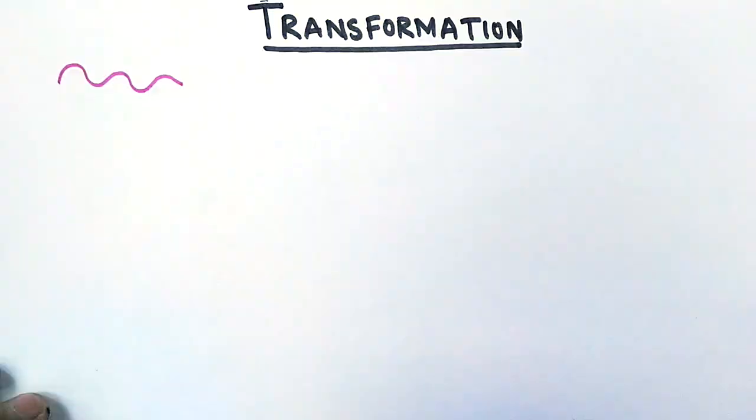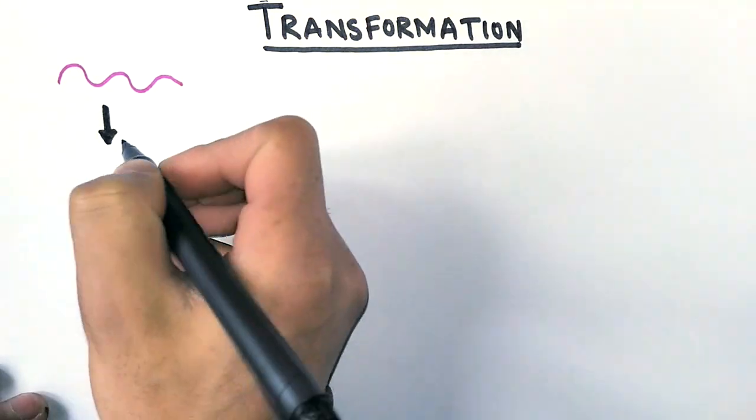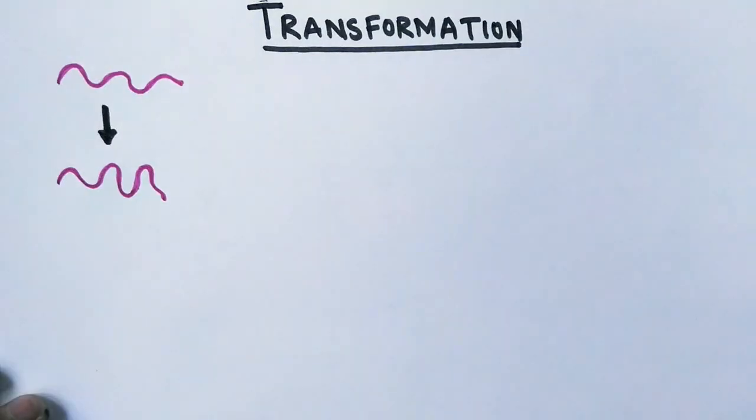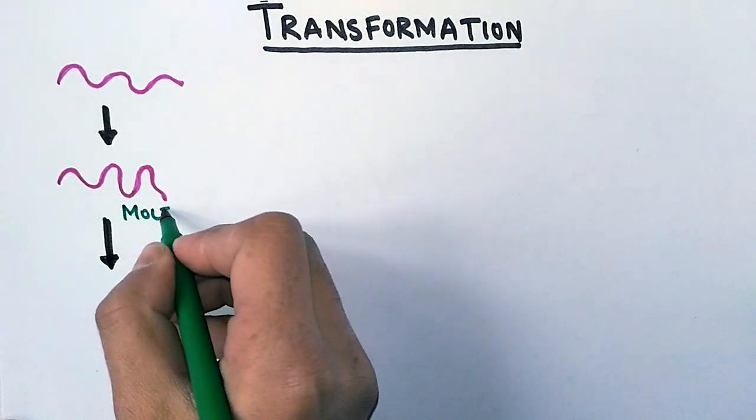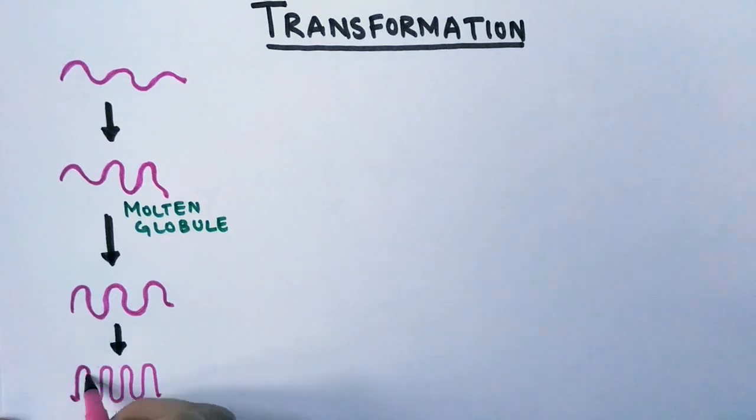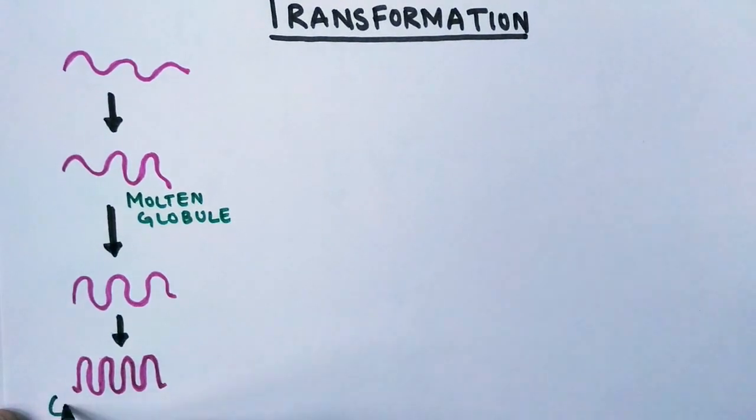So we have a protein here, its primary structure. A newly synthesized protein rapidly attains a molten globule state, and after that the folding continues and we have the tertiary structure, or we can say we have a correctly folded protein.